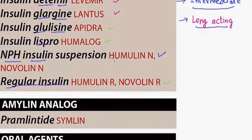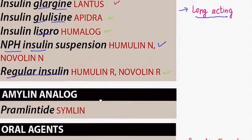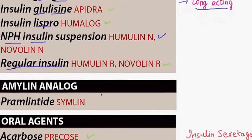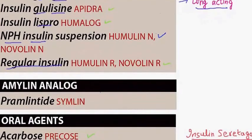Now we come to the amylin analogue. In the amylin analogue there is just one, and that is pramlintide.